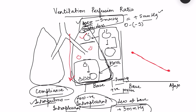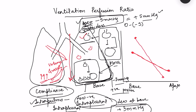Coming to perfusion — again due to gravity, perfusion at the base is much greater. Perfusion depends on hydrostatic pressure, and hydrostatic pressure depends on the volume of blood and gravity. Gravity causes more hydrostatic pressure at the base than at the apex. The perfusion line falls much more steeply from base to apex compared to the ventilation line.